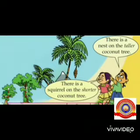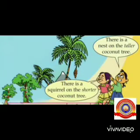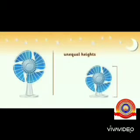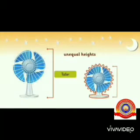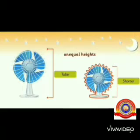We can compare objects on the basis of their height. There is a nest on the taller coconut tree. There is a squirrel on the shorter coconut tree. When we have two objects of unequal heights, we say one object is taller and the other one is shorter.